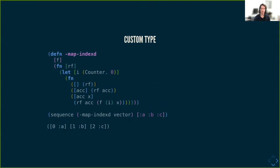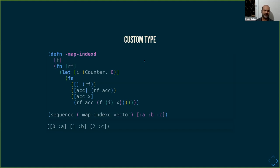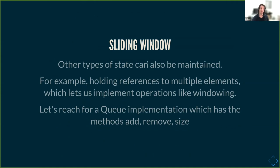Any question about this before we move on? All right. Now, another case for example: we can keep more interesting types of state. We might want to keep a sequence of elements, not just one. For example, we might want a sliding window. In that case, we need a queue.